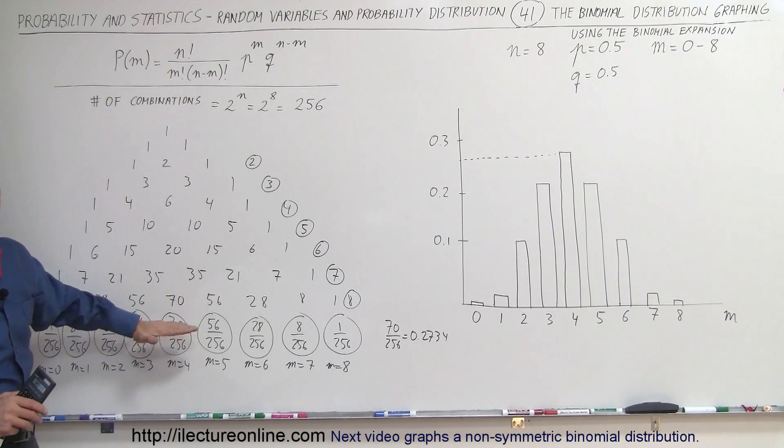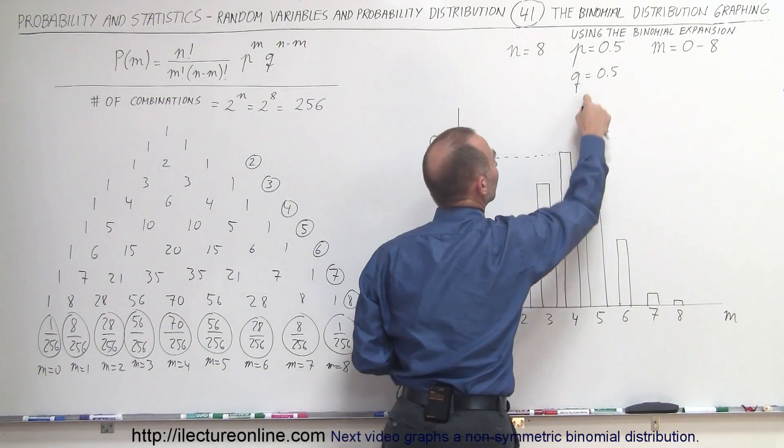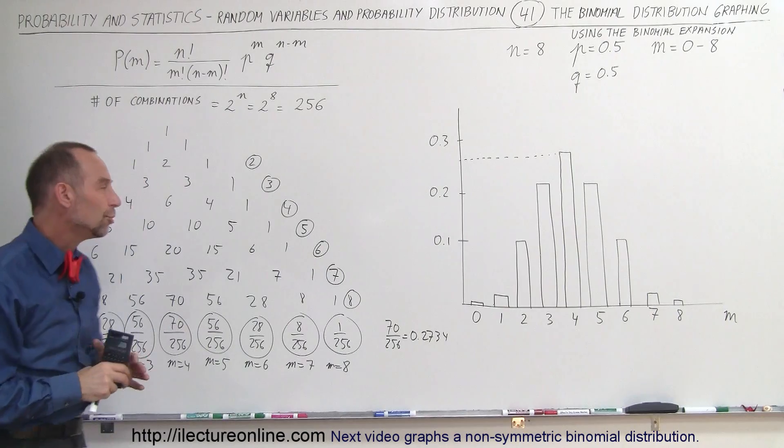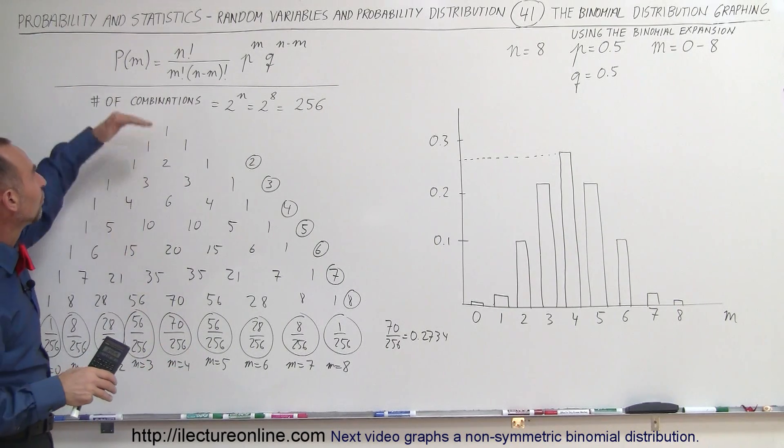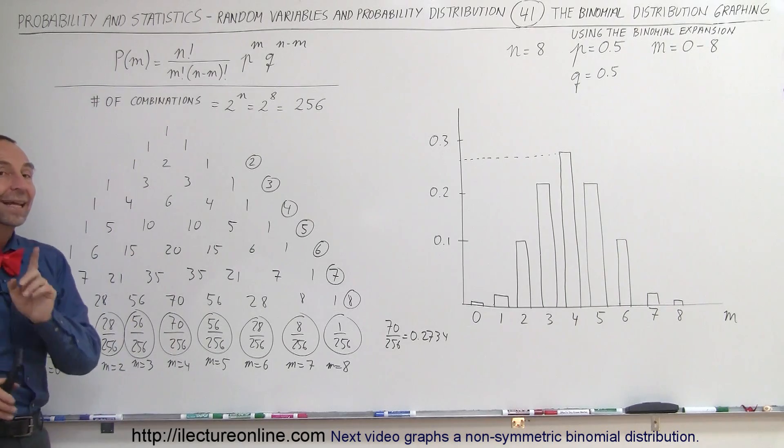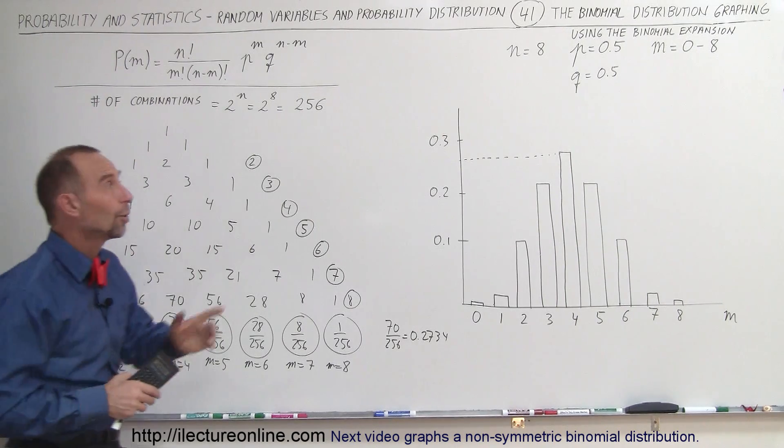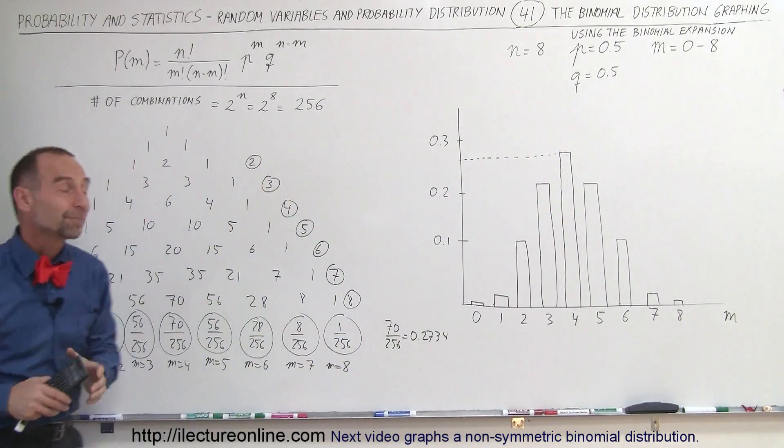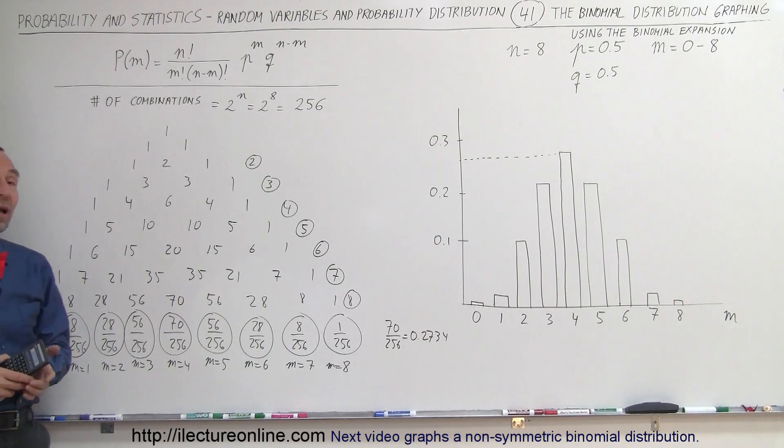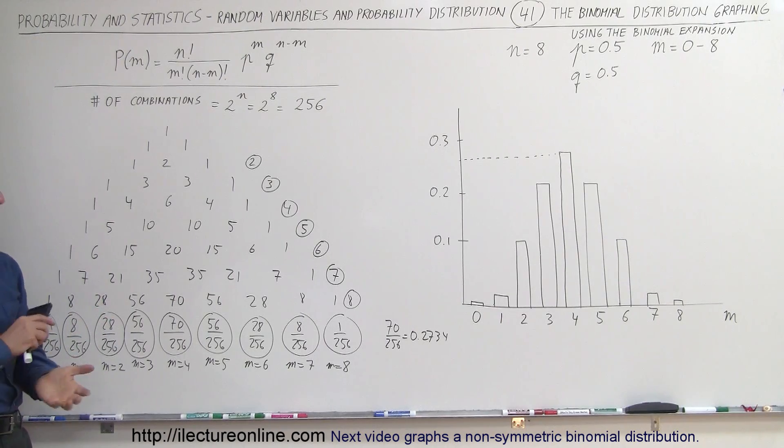But again, this only works if you have symmetry, with other words, when P is equal to Q. When P is not equal to Q, you could use something like this, but it becomes a lot more complicated. And then you probably just want to revert back to this equation. So on the next example, I'm going to show you how to graph a binomial expansion where P and Q will not be the same. And then you'll see how we go ahead and do that there. This is how we use the binomial expansion to come up with an easier way to graph binomial expansion. Or, I should say, binomial distribution. And that's how we do that.